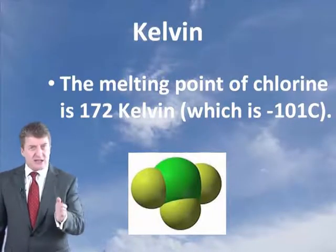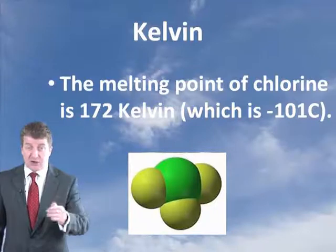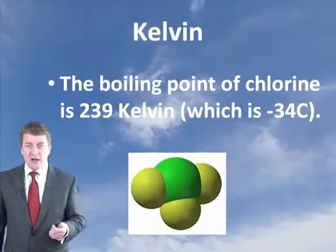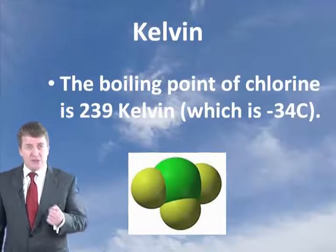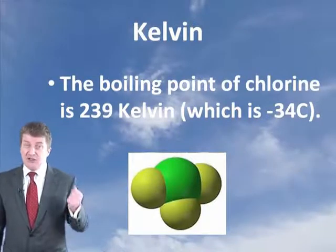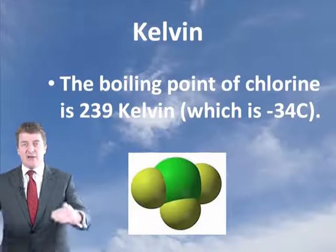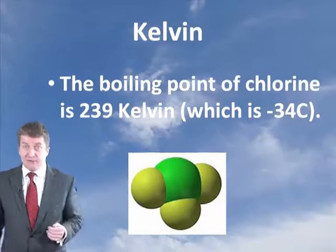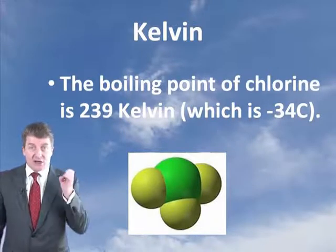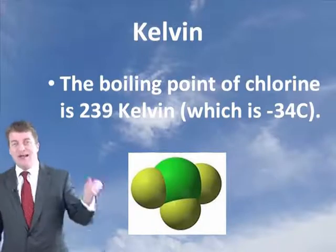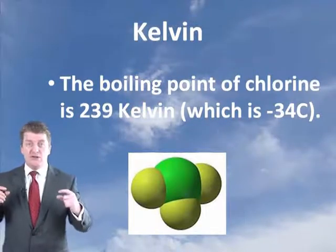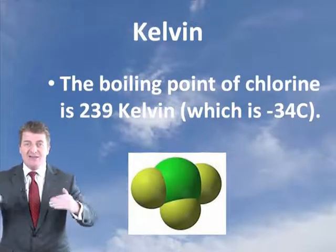If you heat up these three elements to minus 101 degrees C, the chlorine will turn from a solid into a liquid, while the water and steel will still be in solid form. The boiling point of chlorine is 239 degrees Kelvin, which is minus 34 degrees C. So if you heat all three up to minus 34 degrees C, the chlorine will change from a liquid to a gas, while the water and steel will still stay as a solid.